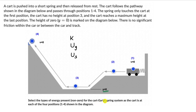When we consider the cart-earth-spring system, we can think of it as a closed system. There is no friction, so all the energy transformations happen within this system. There will be gravitational potential energy and spring elastic energy transforming into kinetic energy, or kinetic and gravitational transforming into spring elastic energy — all sorts of transformations. The elastic potential energy of the spring will be changed to the kinetic energy of the cart, which could then be changed to gravitational potential energy.